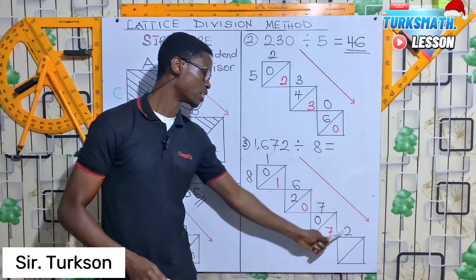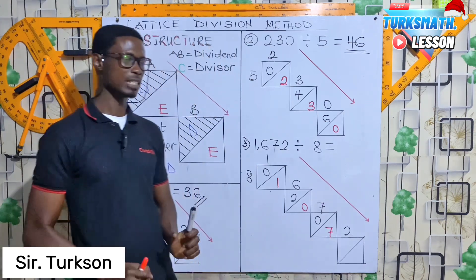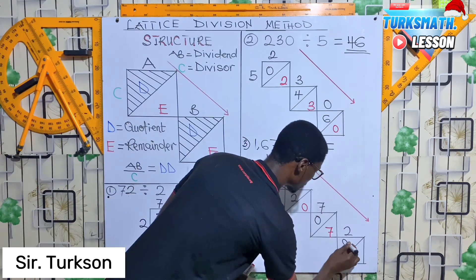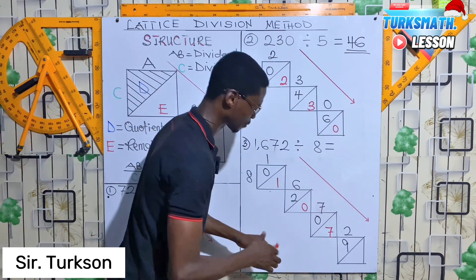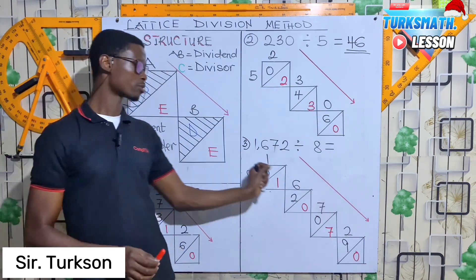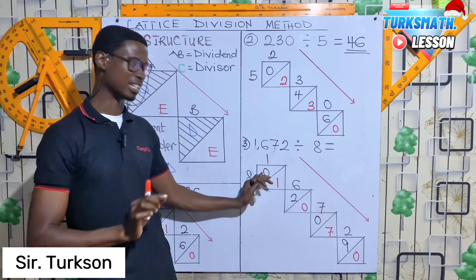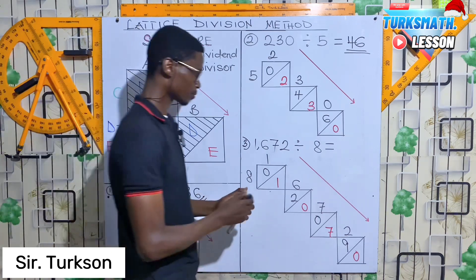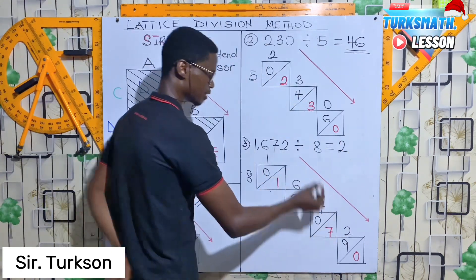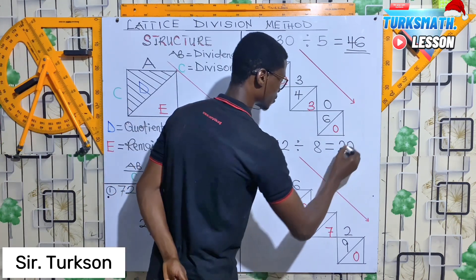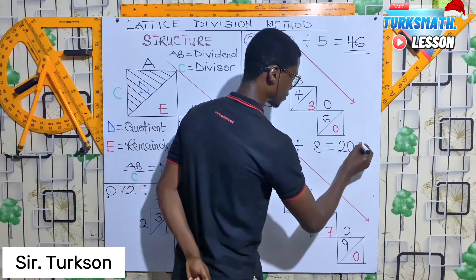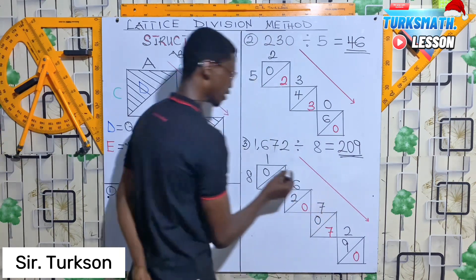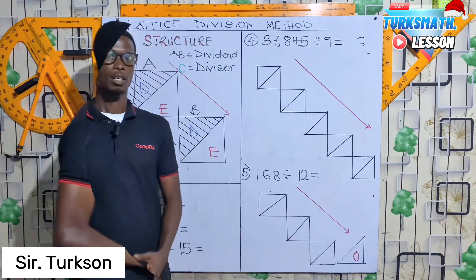The remainder 7 becomes tens, giving us 72. 72 divided by 8 is 9, remainder 0. Now we read the quotient from the upper lattice. The first value is 0 — skip it. The next lattice gives 2, then 0, then 9. So our final answer is 209. Therefore, 1672 divided by 8 equals 209. You read your answer from top to down.